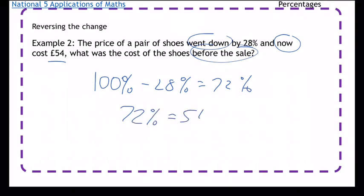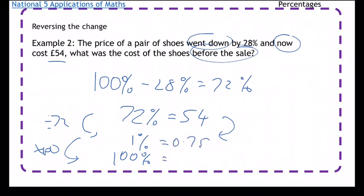So again, going to work out 1% and then going to work out 100%. It works the exact same way - you just divide by 72 and then times by 100. So 54 divided by 72 is 0.75, then times by 100 is 75. So before the sale, the shoes were £75.